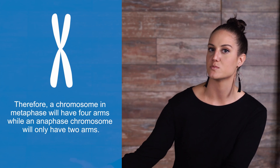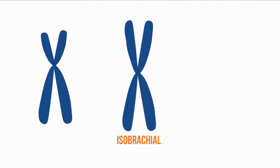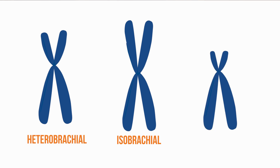Therefore, a chromosome in metaphase will have four arms, while anaphase chromosomes will only have two arms. If a chromosome's two arms are equal, it is referred to as an isobrachial chromosome, and if the two arms are unequal in length, it is referred to as a heterobrachial chromosome. If a chromosome has arms that are not equal, then the shorter arm is classified as P, and the longer arm is classified as Q.